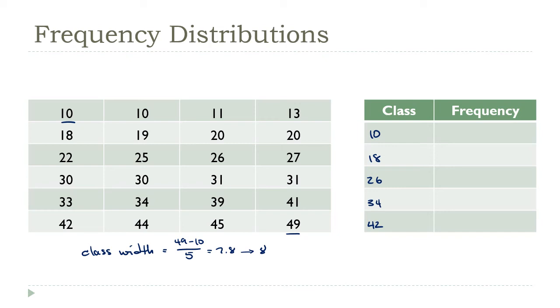And for the upper limits, I'll use 1 less than the next class's lower limit. So the first class will end at 17, that's 18 minus 1. The next class will be 25, that's 26 minus 1. Or, remember, these all have to differ by the class width. So you could just keep adding 8. 25 plus 8 is 33. 33 plus 8 is 41. 41 plus 8 is 49.